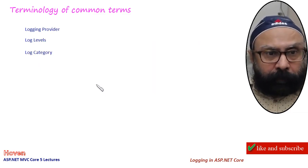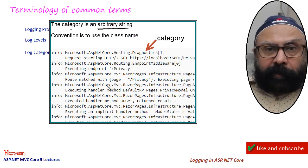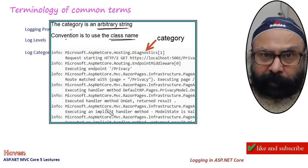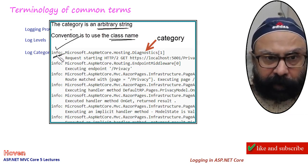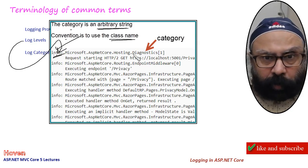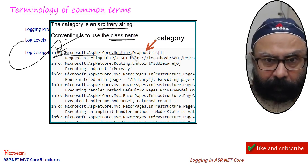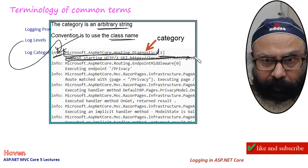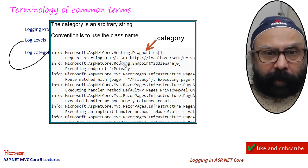Let us now see the next term: log category. A category is an arbitrary string - any string. The convention is to use the class name, so you know from where the log is coming. For example in a log dump: 'info' means this is the log level for information. Then 'Microsoft.AspNetCore.Hosting.Diagnostics' is the class giving the log - this is the category. Then there is the message. So a category is an arbitrary string and usually the class name is the category.